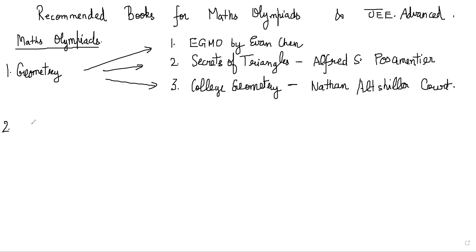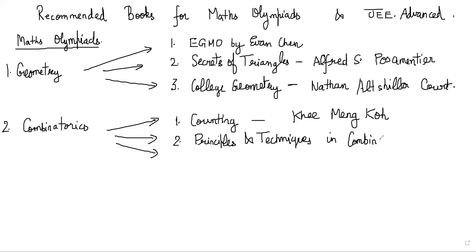Moving on, let's go to Combinatorics. I can also list down three books for this. The first one is Counting by Kheem and Koch. That is a very nice and easy-paced book. You can definitely follow that. Then there is Principles and Techniques in Combinatorics by Chong. This is World Scientific Publications.